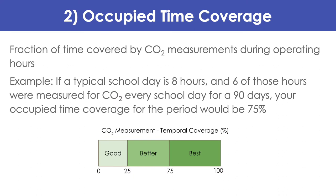Occupied time coverage is the fraction of time covered by CO2 measurement during operating hours, over a measurement period of 90 days. We assume eight occupied hours per day and one hour as a fundamental unit of occupied time coverage. Occupied time coverage is defined as the percentage of hours within a period that have one or more CO2 readings, meaning one day has a maximum of eight readings counting toward occupied time coverage. For instance, if you measured CO2 for six hours every day for 90 days, your occupied time coverage would be 75%.